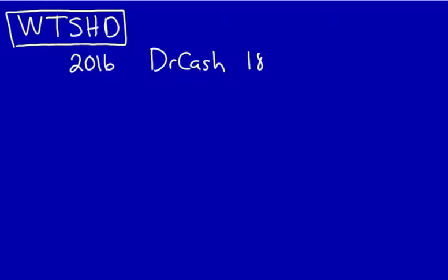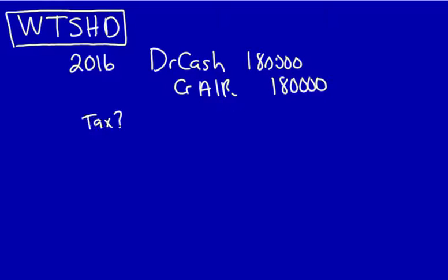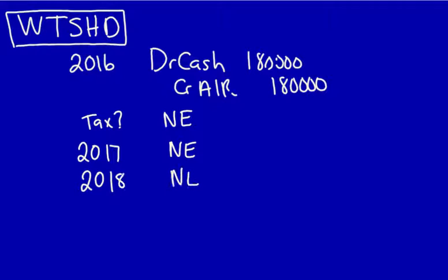Now, what do I do? I want to look at what would have happened if I had done it right — what they should have done. Starting with 2016, when they made the error, there should have been a debit to cash of $180,000 and a credit to accounts receivable of $180,000. Let's look at the tax implications. These are both statement of financial position — also called balance sheet accounts — so therefore there's no effect on our taxes. Move on: 2017, no effect. 2018, no effect.